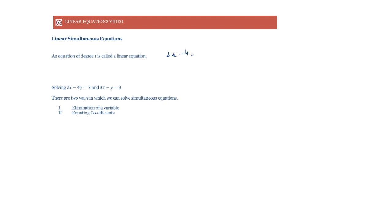For example, here we have 2x minus 4y is equal to 3, and 3x minus y is equal to 3. We have to solve this set of equations, which means we need to find the values of x and y such that they satisfy both equations.